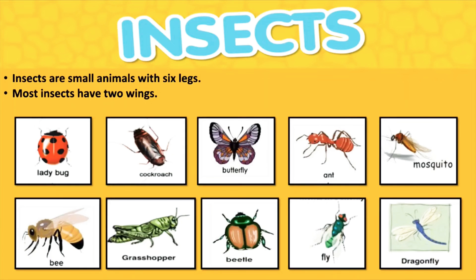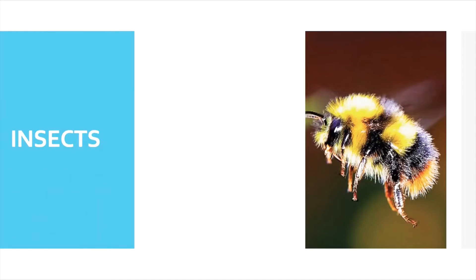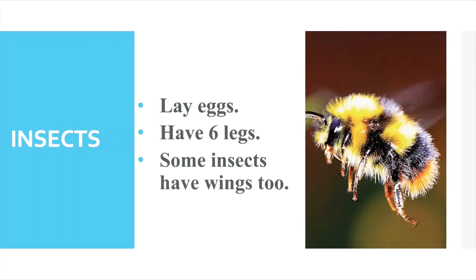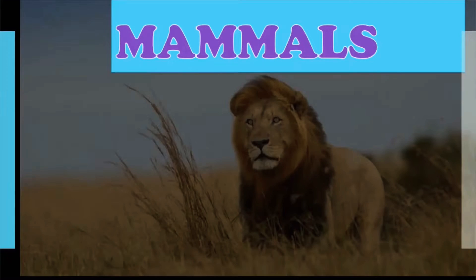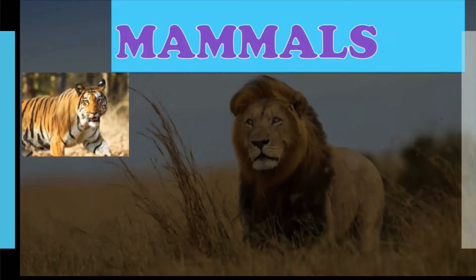Insects are small animals with six legs. Most insects have two wings. Ladybug, cockroach, butterfly, mosquito, bee, grasshopper, beetle, fly, and dragonfly are some examples of insects. Insects lay eggs and have six legs, and some insects have wings, like the honey bee.